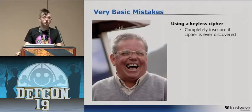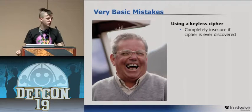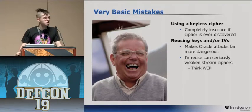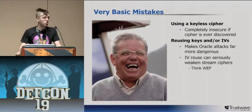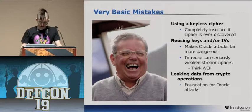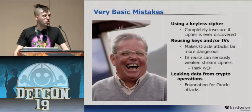Some basic mistakes: using a keyless cipher is not secure unless it's totally private and nobody knows how the algorithm works — and even then it's probably not very secure. Reusing keys and initialization vectors is a bad idea — it makes oracle attacks far more dangerous and can seriously weaken the integrity of stream ciphers. WEP is an example of this. And leaking data from crypto operations builds the foundation for oracle attacks.